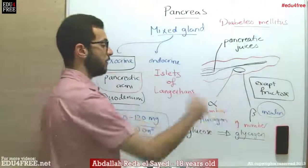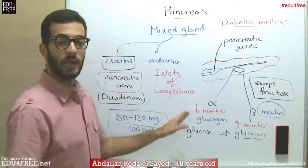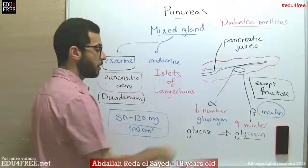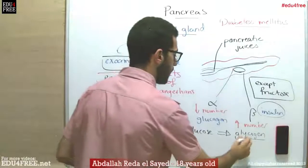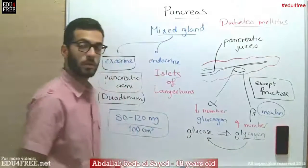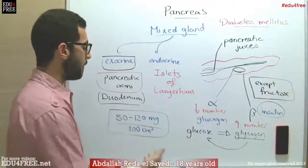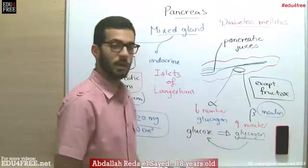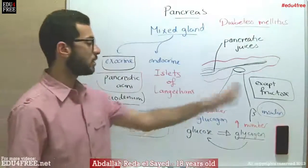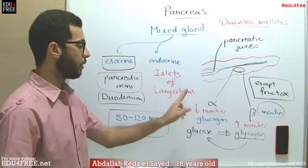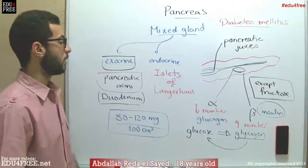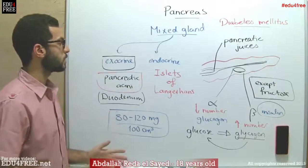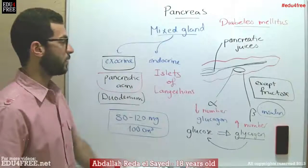On the other hand, glucagon antagonizes the effect of insulin — it is directly the opposite. Glucagon works on increasing the conversion of glycogen into glucose, which increases the levels of glucose in the blood. So insulin decreases the rates of glucose, while glucagon increases the rates of glucose. That is the pancreas and its two functions: exocrine and endocrine.